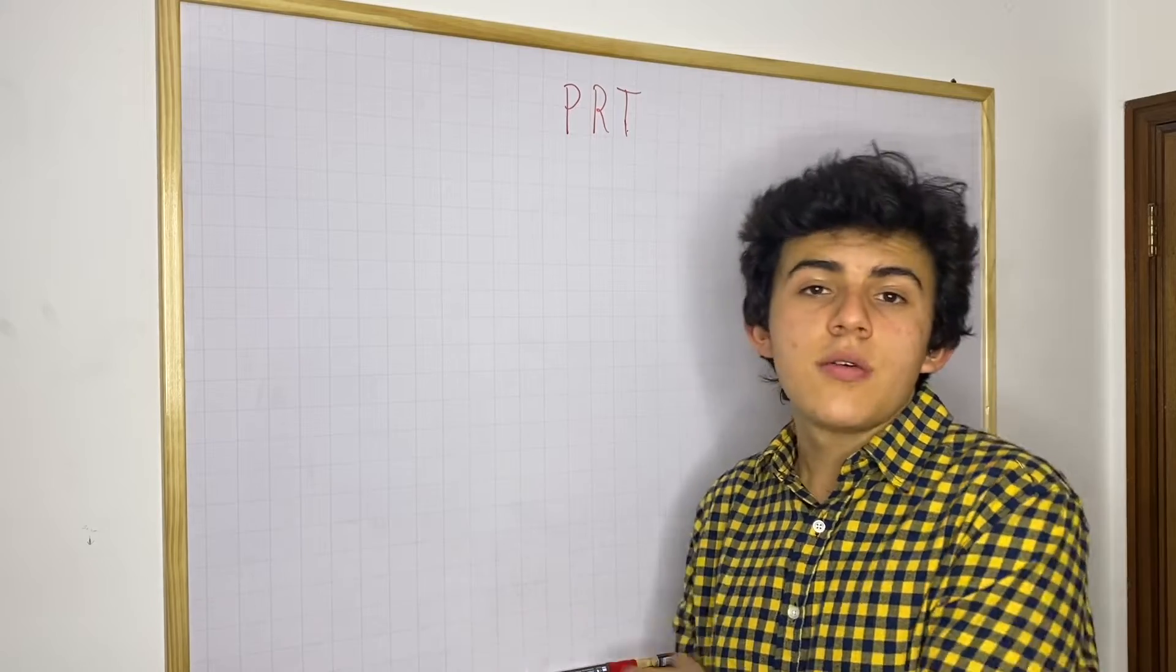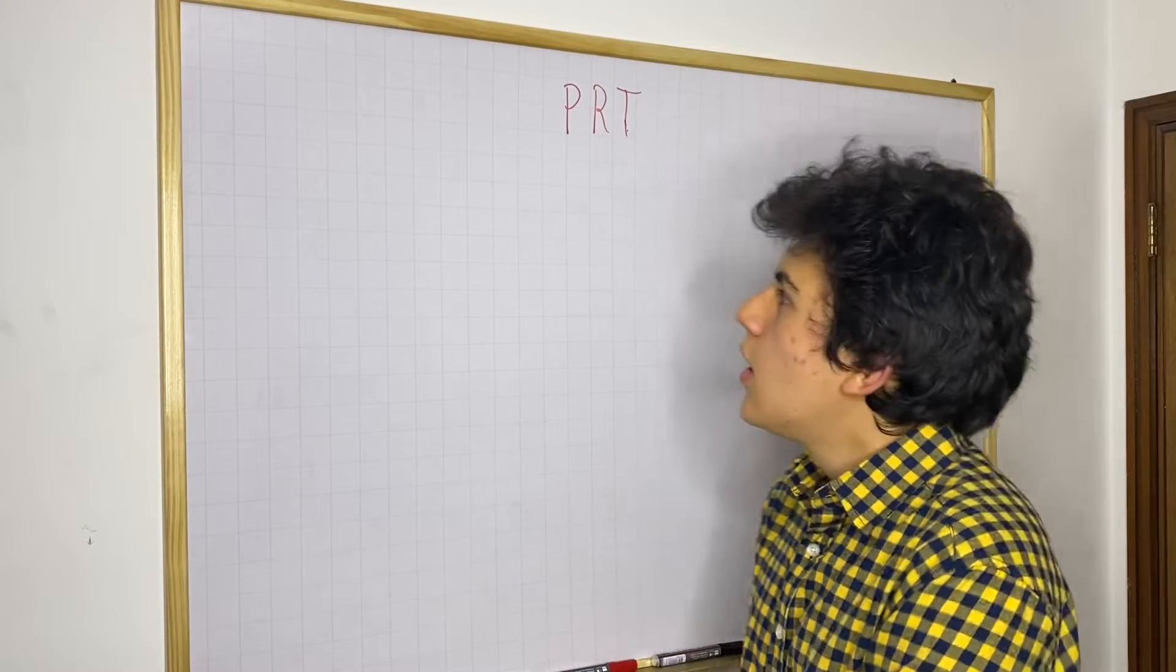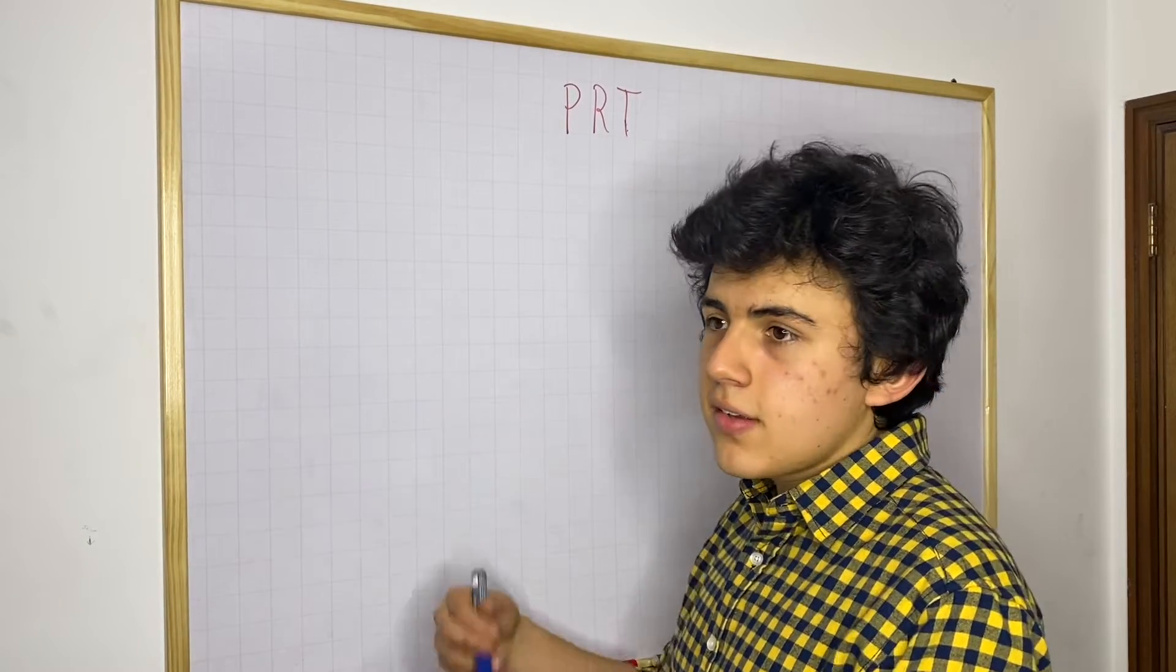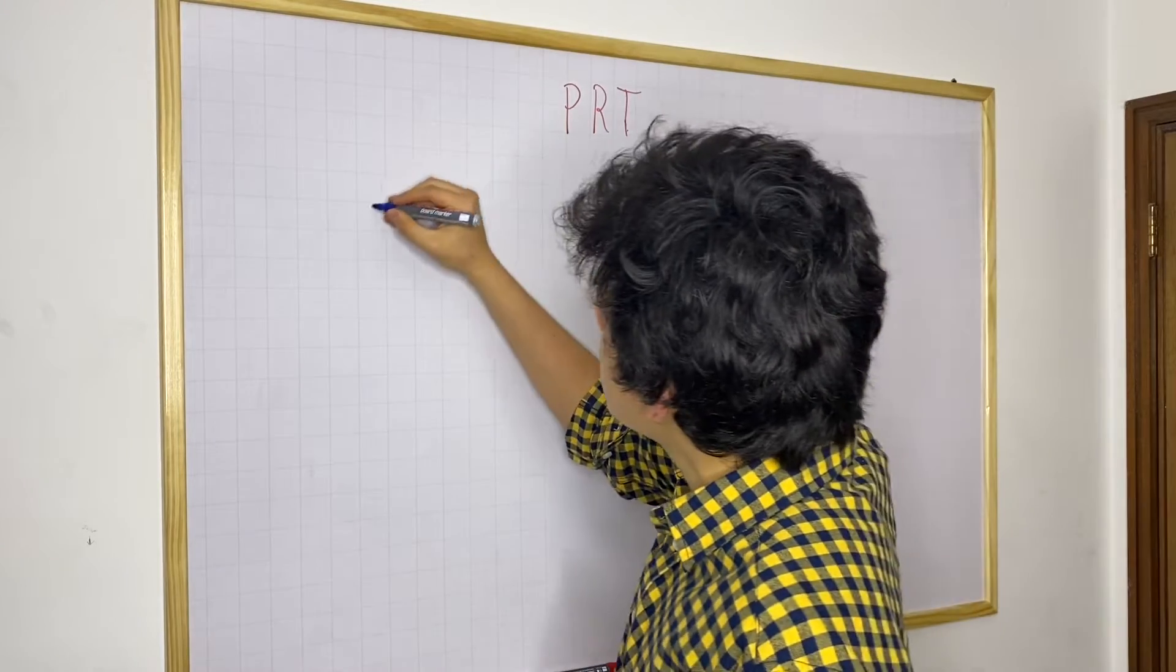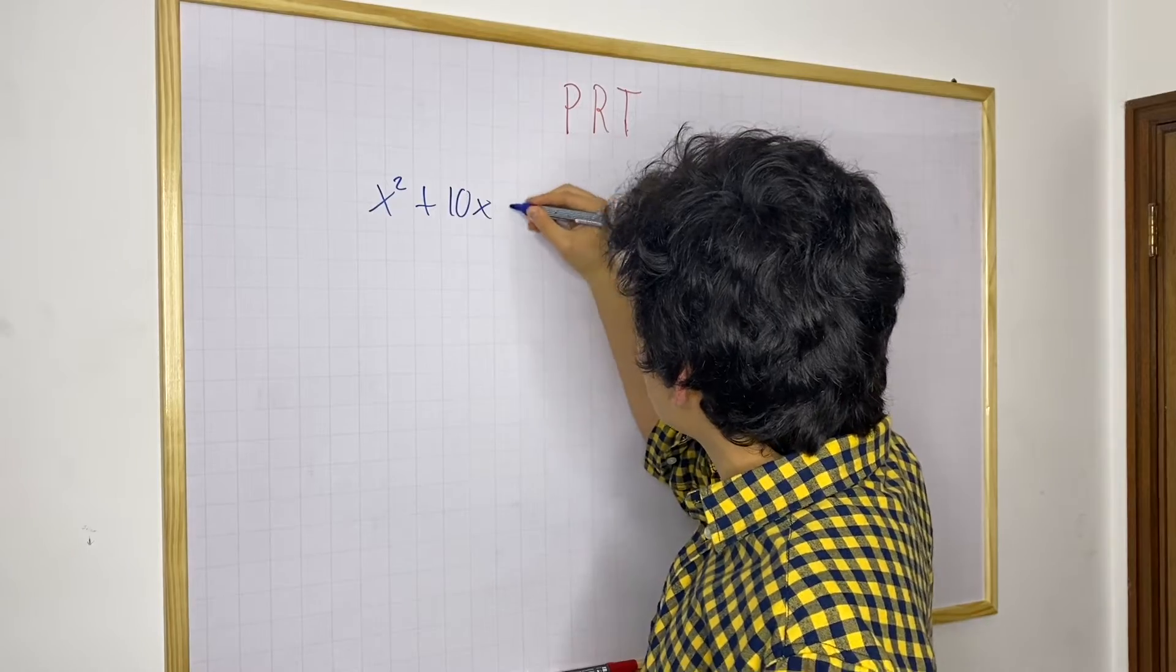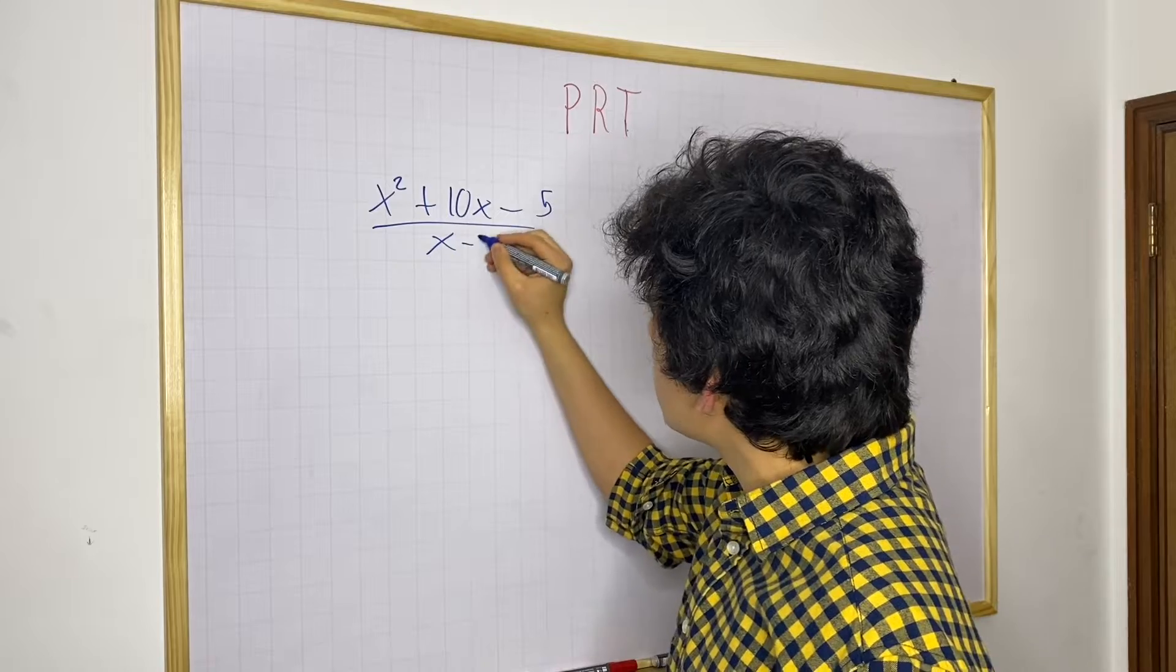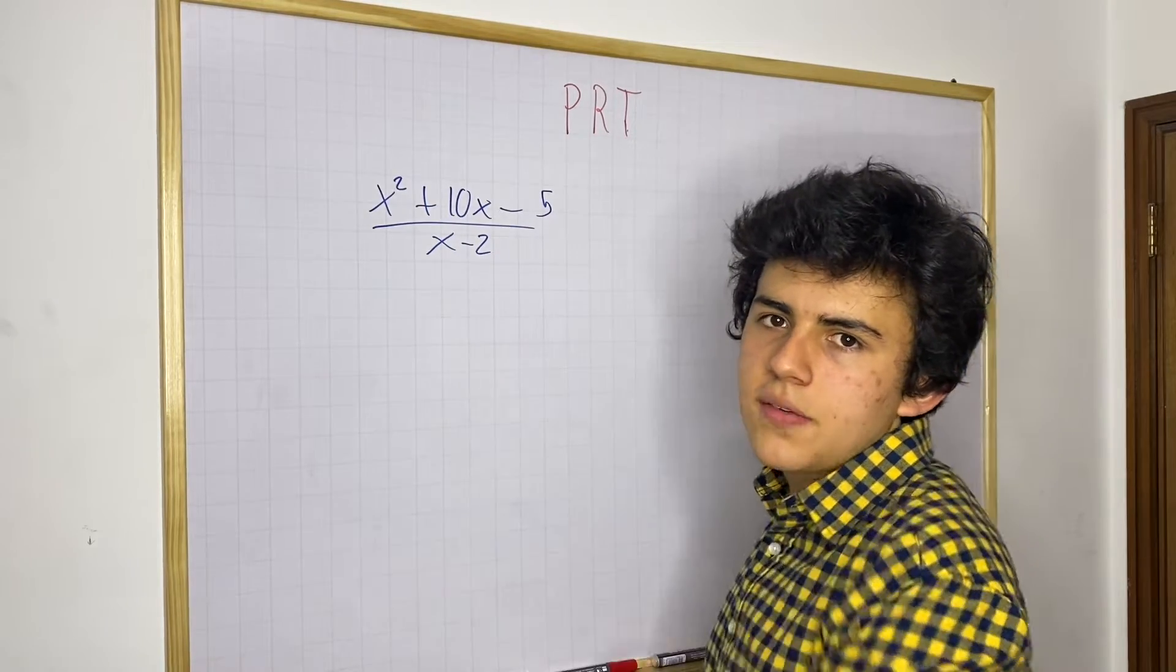How do you compute the remainder of a polynomial in an easier way? So basically what this theorem says is that if you have a polynomial, let's say for example x squared plus 10x minus 5 and let's say we're dividing it by x minus 2, how much is the remainder of this division?